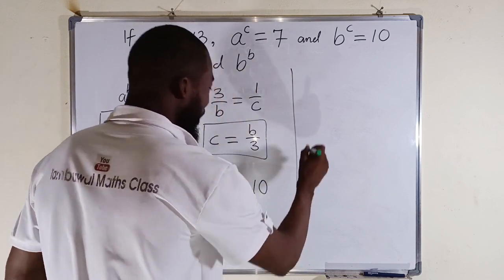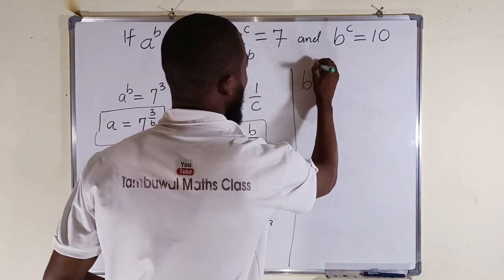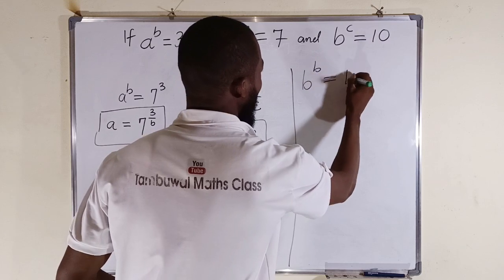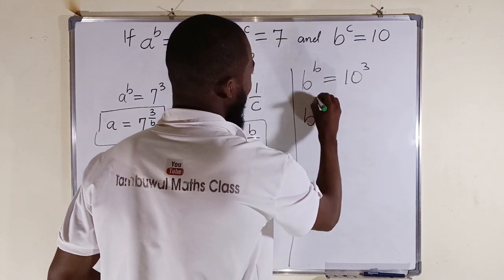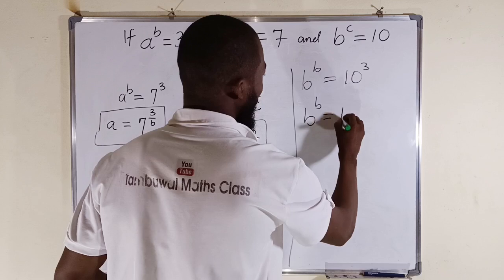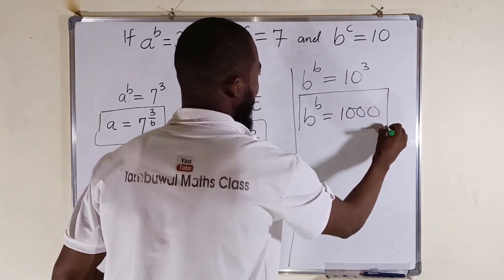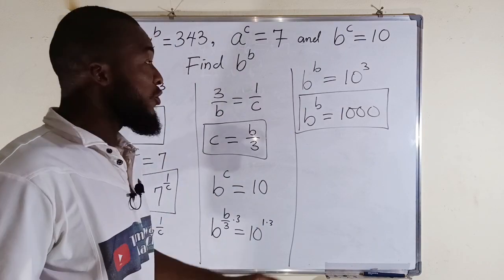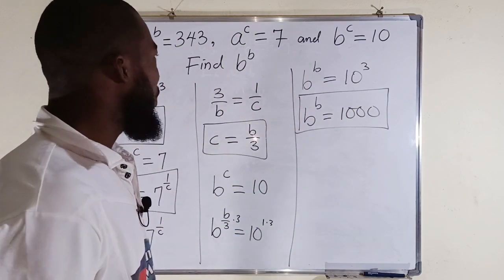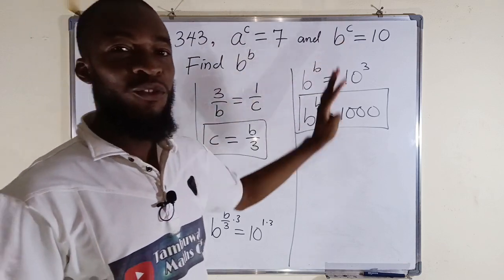Finally, you can clearly see that b to the power of b is equal to 10 to the power of 3. And b to the power of b is equal to 1000. Final answer. b to the power of b is equal to 1000, given that all these equations are true.